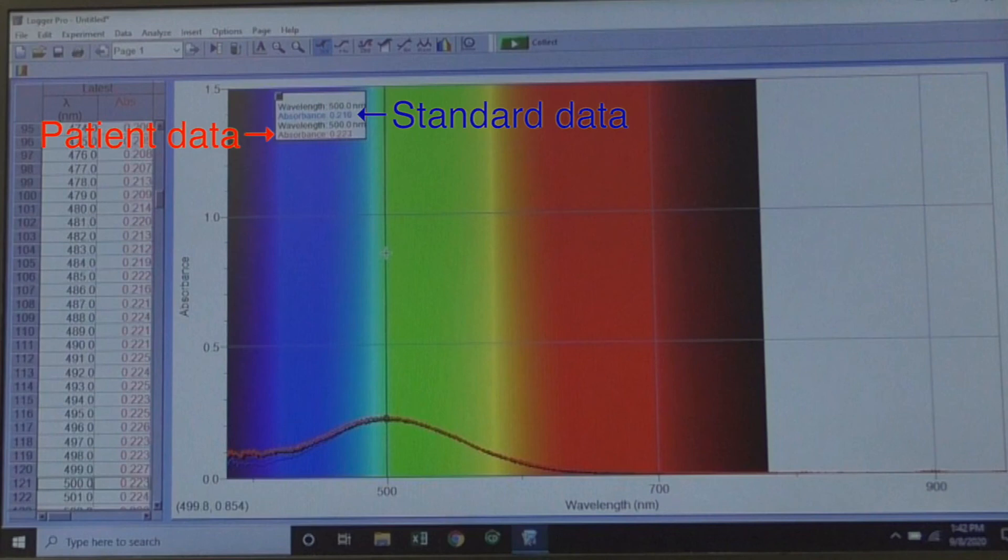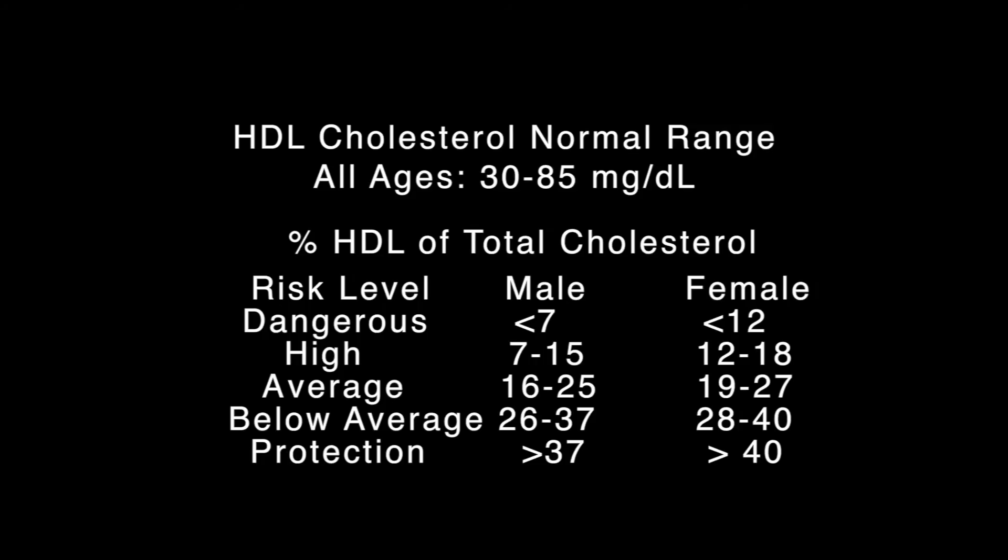Refer to your lab manual and perform the calculations needed. You will be calculating the amount of HDL in milligrams per deciliter and then calculating the percent of HDL as part of the total cholesterol. The results should support what your spectra shows. Record and interpret your patient's results based on the values given in your laboratory notebook.